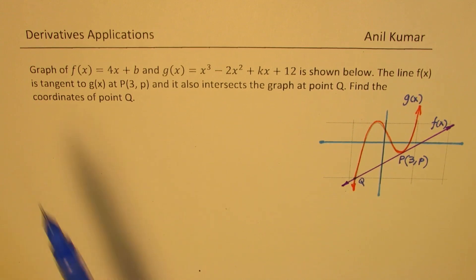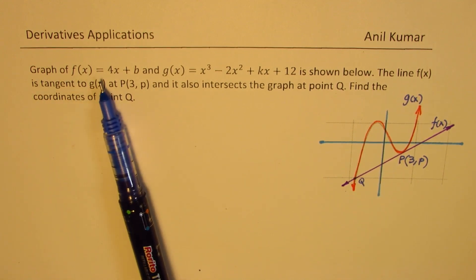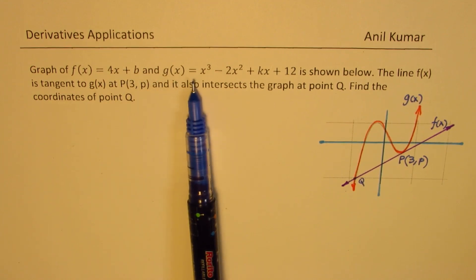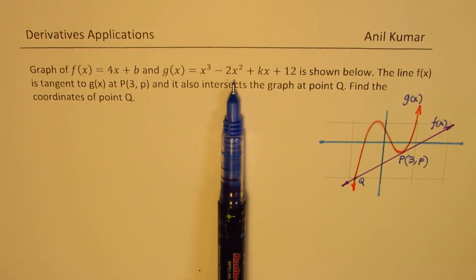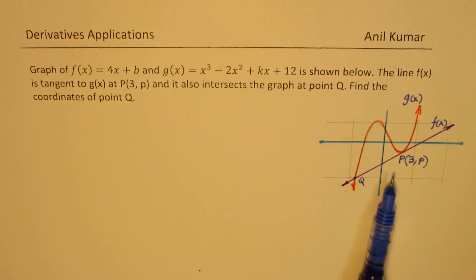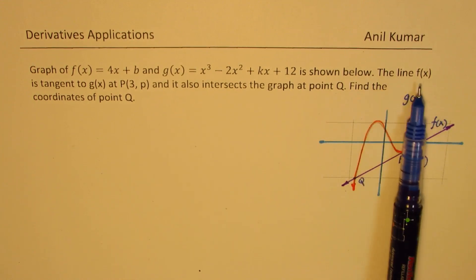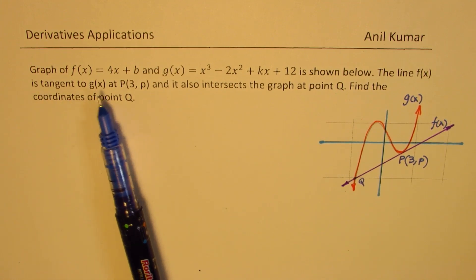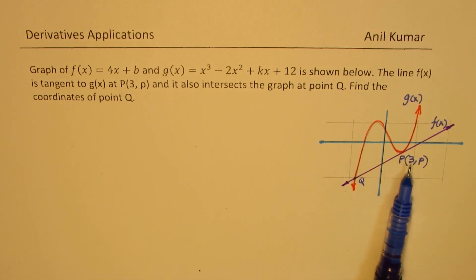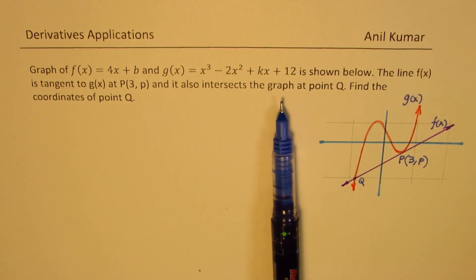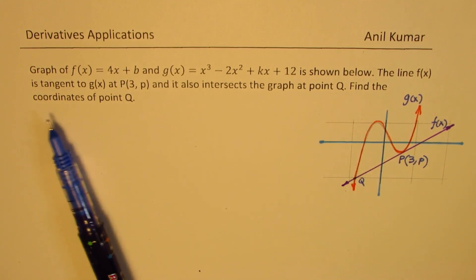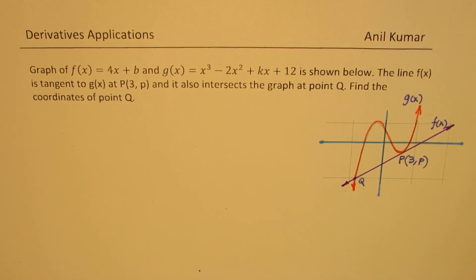The question was: the graph of f(x) = 4x + b and g(x) = x³ - 2x² + kx + 12 is shown below. The line f(x) is tangent to g(x) at point P(3,p) and it also intersects the graph at point Q. Find the coordinates of point Q. That's a brilliant question and it involves a lot of concepts to deal with. You can always pause the video, try it out, and then look into my suggestions.